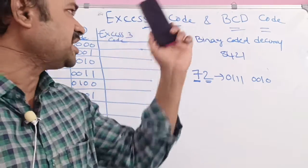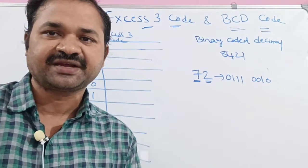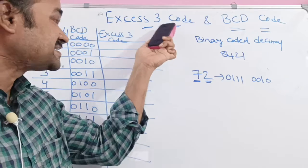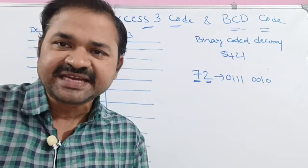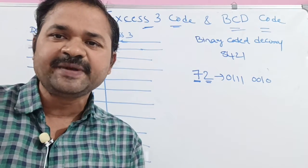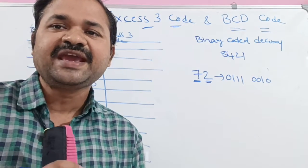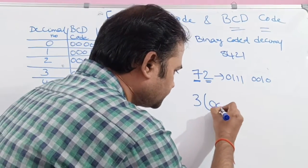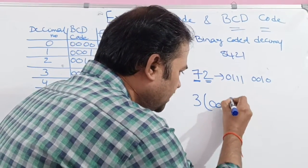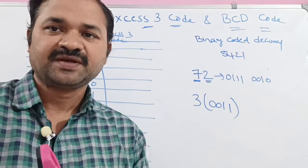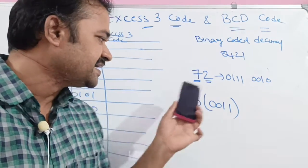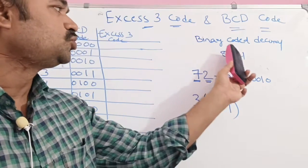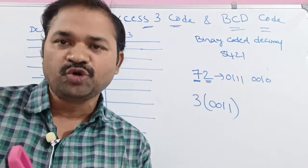Now let us see about XS3 code notation. The name itself specifies the meaning — XS3 means Excess-3. So XS3 code means we have to add decimal number 3 to the BCD number. XS3 means adding decimal number 3 to the BCD code.